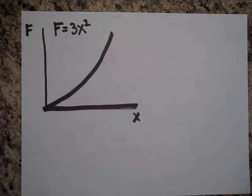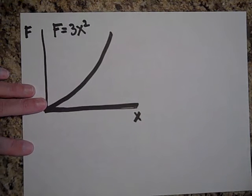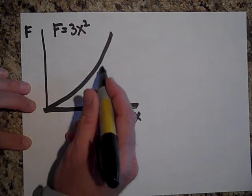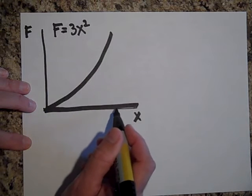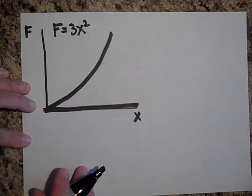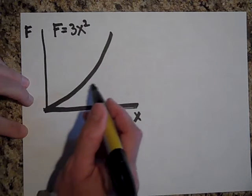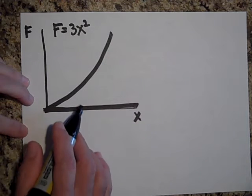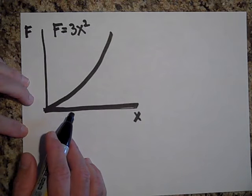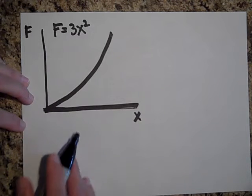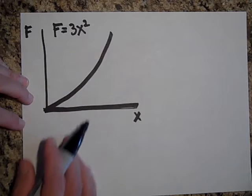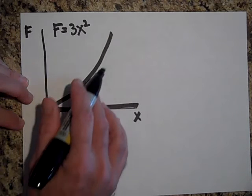Well, the area underneath this graph is the work done, but that area is not so easy to find because it's not a rectangle or a triangle or a trapezoid. It's a curved area, and so you have to figure out how to get that.